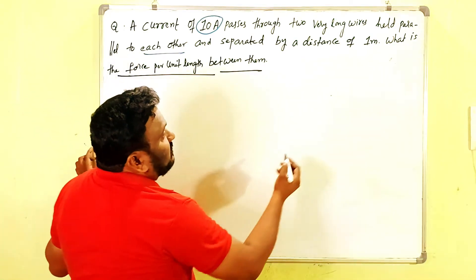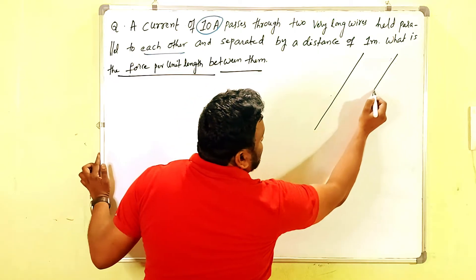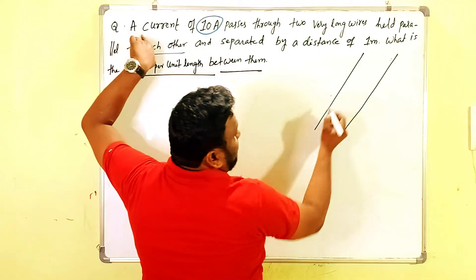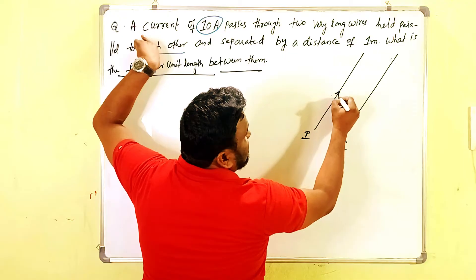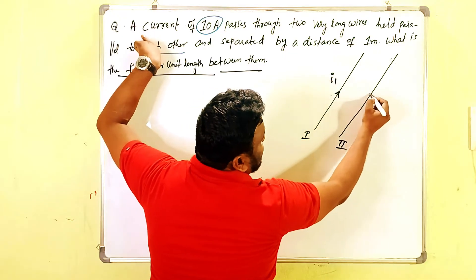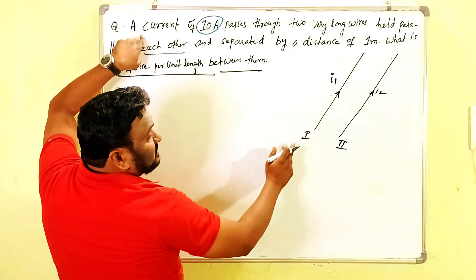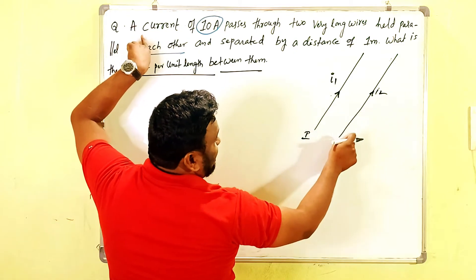How much current is passing through them? This is I'm showing the first conductor and this is the second conductor. This is the current i₁ and this is the current i₂. i₁ amount of current is passing through the first conductor and i₂ amount of current is passing through the second conductor.